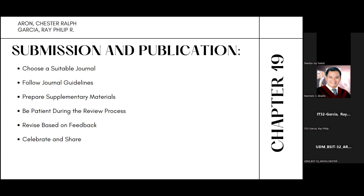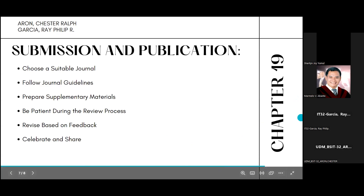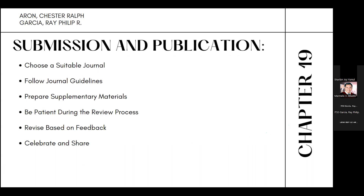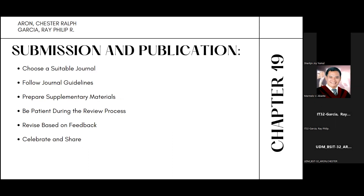Submission and publication. Choose a suitable journal that aligns with the scope and focus of your research. Follow journal guidelines — adhere to the specific formatting, citations, and submission guidelines of the chosen journal. Prepare supplementary materials such as datasets or additional documents as required. Be patient during the review process as peer review may take time. Revise your manuscript based on feedback from reviewers and editors. Once published, celebrate your achievement and actively share your research findings with the academic community.